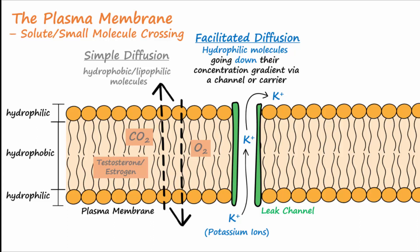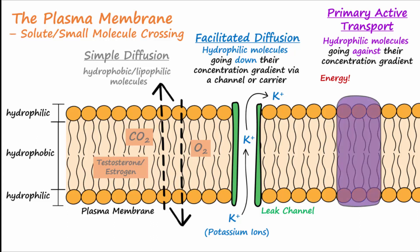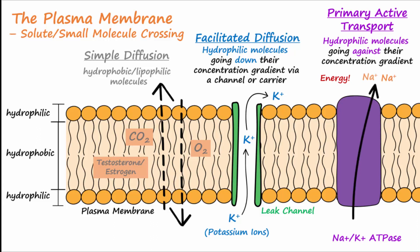The next method is primary active transport and involves pumping solutes against their concentration gradient, or from low to high. Pumping from low to high requires energy to be supplied. A good example of primary active transport is the sodium-potassium ATP pump, also called the sodium-potassium ATPase. This carrier pumps three sodium ions out of the cell for every two potassium ions that it pumps into the cell. For the sodium-potassium pump to move ions from low to high, energy in the form of ATP is required.